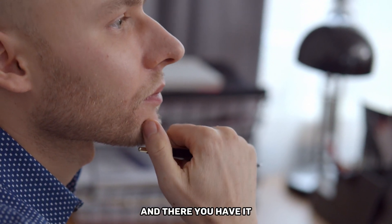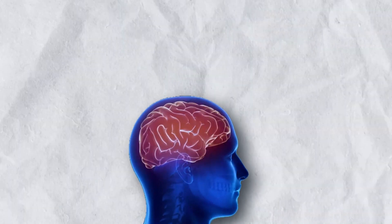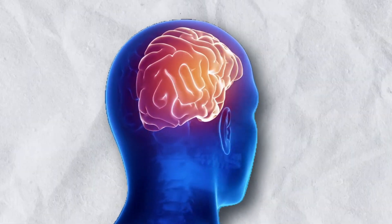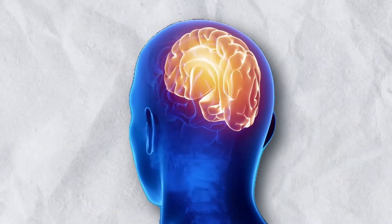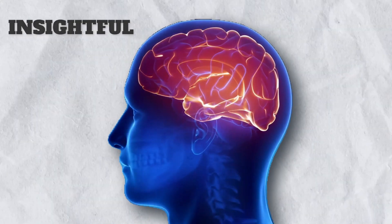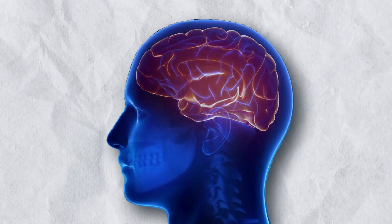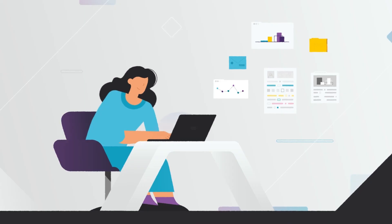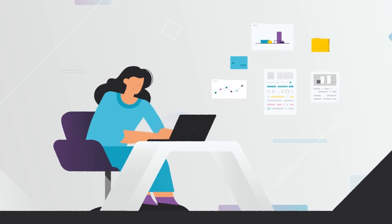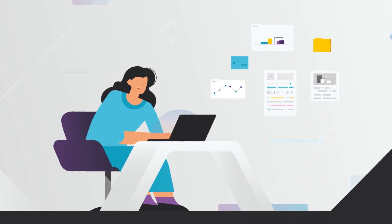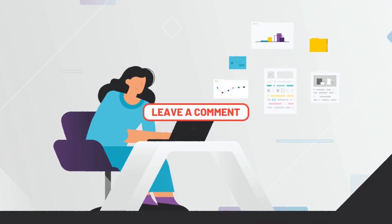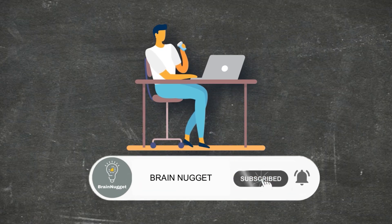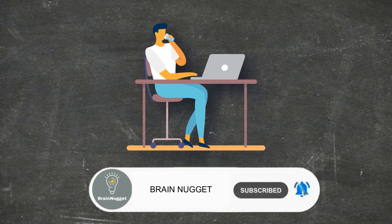And there you have it, five social psychology tricks for getting what you want. Did you find this content to be insightful? We truly hope so — which trick gave you the most value? Please let us know in the comments below. Thanks for watching Brain Nugget, and we'll see you in the next video.